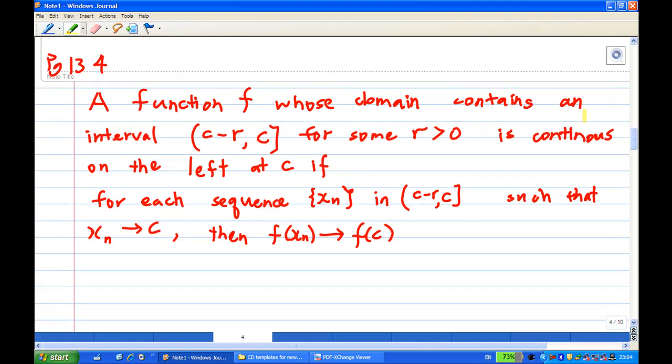Similarly, we can also talk about a function that is continuous on the left of c. If you have a half open interval containing c, on the left side of c, and also for each sequence xn inside this half open interval, xn converges to c, then f of xn converges to f of c.